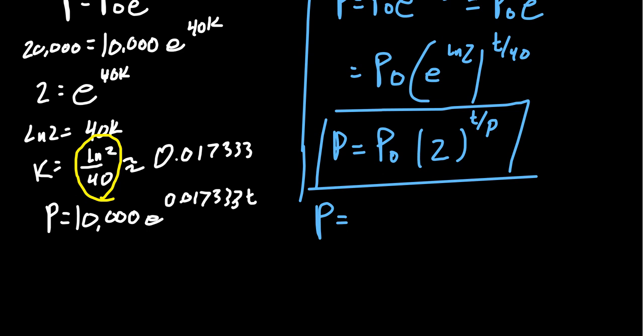So P equals, our initial population was 10,000. And then it doubles t over 40. So it doubles every 40 minutes. So can we ask ourselves, what's the population after an hour?